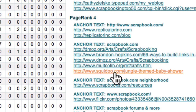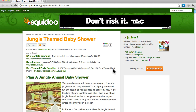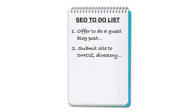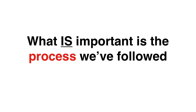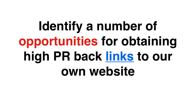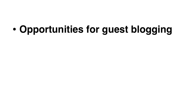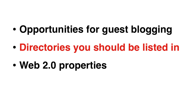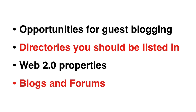Now going back to my competitor's link network, I can also see that they obtained a PR4 backlink from a Squidoo lens. This might give me the idea to create my own Squidoo lens. So the next item for our SEO to-do list might be: create a Squidoo lens about scrapbook layouts and link back to the main site. The most important thing to notice here is not the actual items on our SEO to-do list, as they will be different for every website. What is important is the process that we've followed. By reverse engineering the link network of our competitors, we've been able to identify a number of opportunities for obtaining high PR backlinks to our own website. The most common opportunities you will find are guest blogging, directories that you should be listed in, web 2.0 properties, and blogs and forums that you can contribute to.